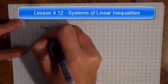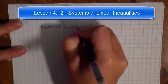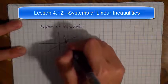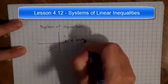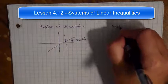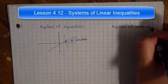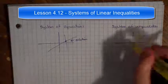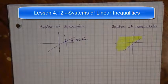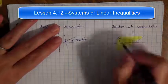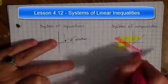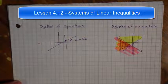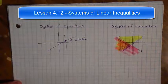When we had a system of equations, our solution was the point where two lines intersected. When we have a system of inequalities, when I graph an inequality I end up with one side of a line that's shaded. If I graph two inequalities on the same coordinate plane, I'll end up with two lines that have shading, and the solution to the system is that region where the shading overlaps — where you have double shading.